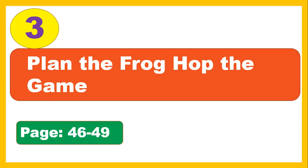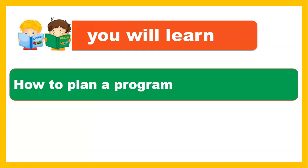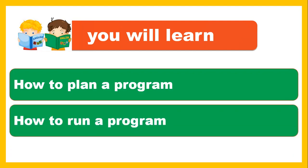In this lesson, Plan the Frog Hop Game, you will make a program where a frog can jump. You have to write the instructions. In this lesson you are going to learn how to plan a program. In the previous classes we learned how to make a plan and how to make an algorithm. Today we're going to make that plan to create a program, and then learn how to run it.